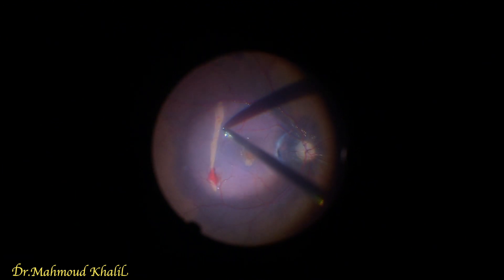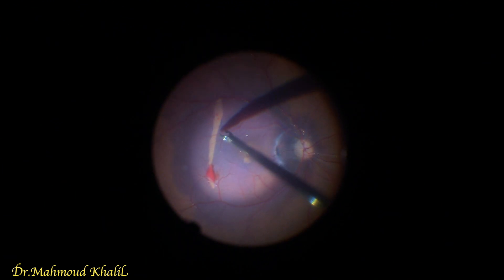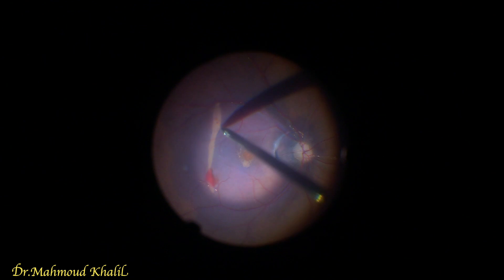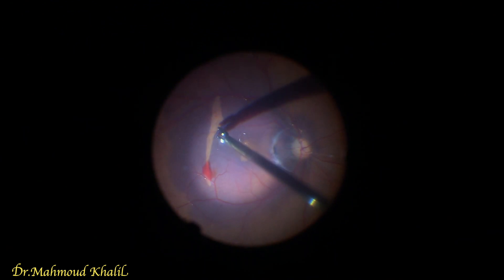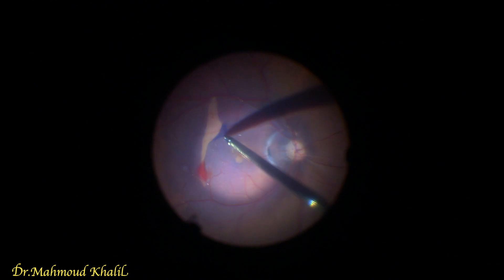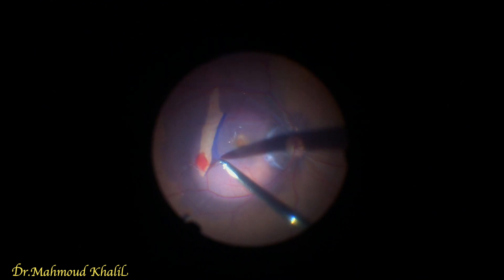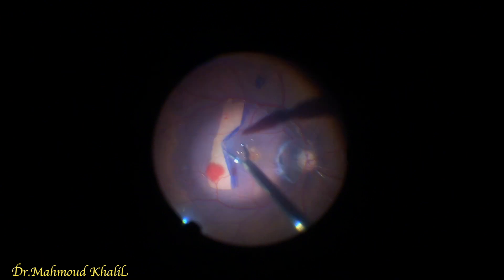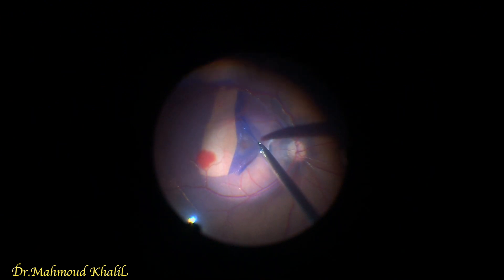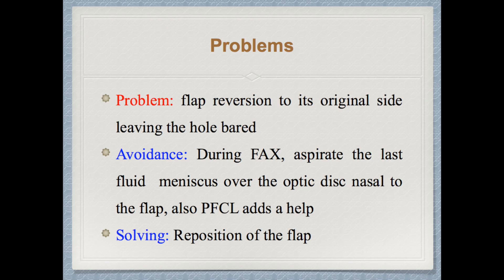Then getting the temporal flap, peeling the ILM at the temporal site, and inverting this temporal flap on the surface of the macular hole. The idea of all these techniques is to make a scaffold. The main problem of the temporal ILM technique is flap reversion to its original site, leaving the hole uncovered.